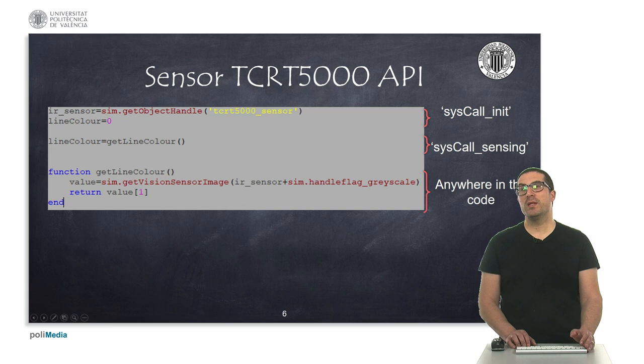Then, within the sysCall_sensing function, we must call the sim.getVisionSensorImage function. This function will return the image of the vision sensor.